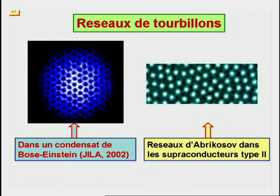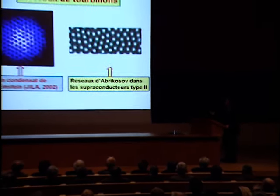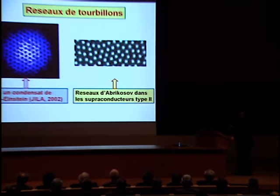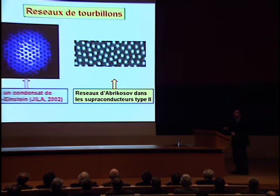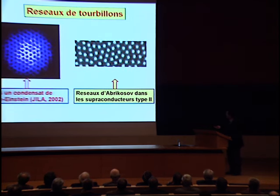Il est maintenant possible de produire des condensats avec des centaines de tourbillons. Ces systèmes forment une structure très régulière et sont appelés réseaux d'Abrikosov, par analogie avec les réseaux de lignes magnétiques produits dans certains supraconducteurs. On retrouve donc une analogie très intéressante entre l'effet de la rotation dans les superfluides et l'effet du champ magnétique dans certains supraconducteurs.